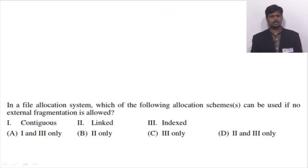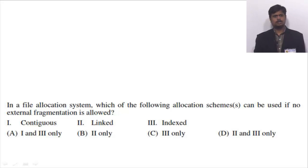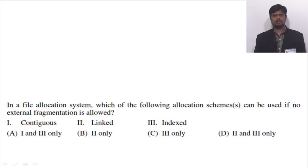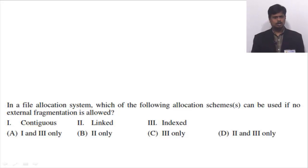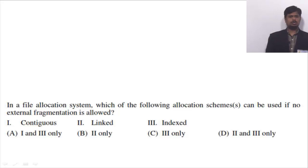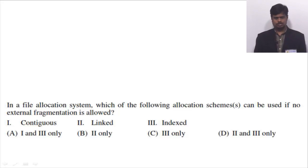This question is from GATE 2017, set number 2 paper, and this question belongs to operating system. Coming to the question statement: in a file allocation system, which of the following allocation schemes can be used if no external fragmentation is allowed? Statement 1: contiguous. Statement 2: linked. Statement 3: indexed. Option A: 1 and 3. Option B: 2 only. Option C: 3 only. Option D: 2 and 3 only.